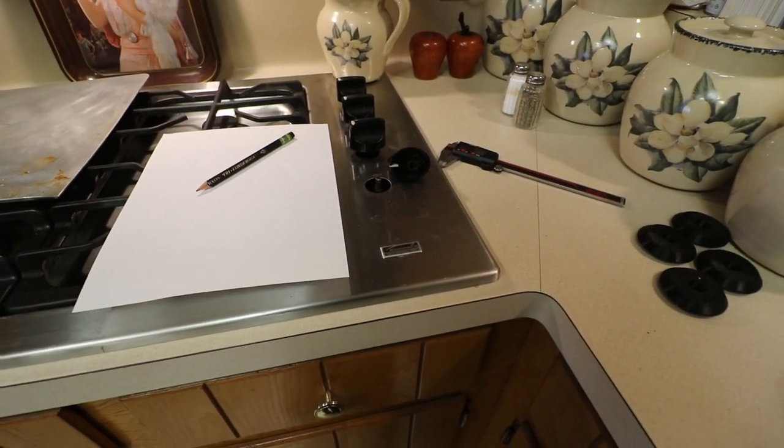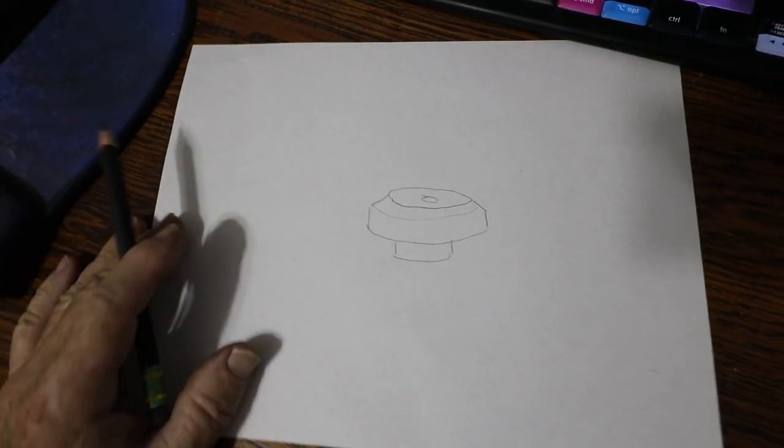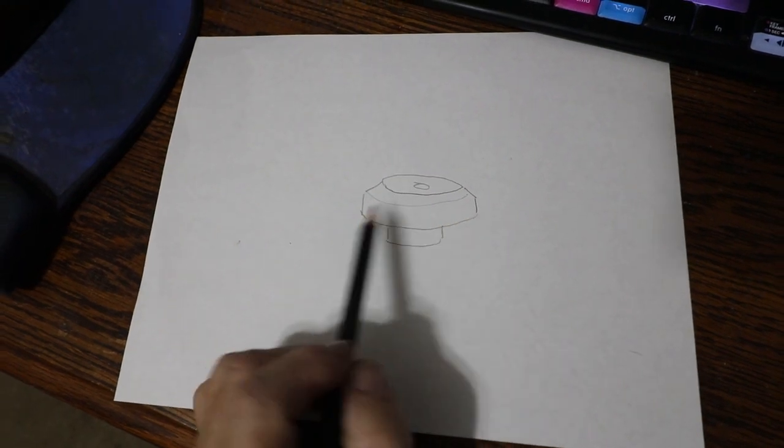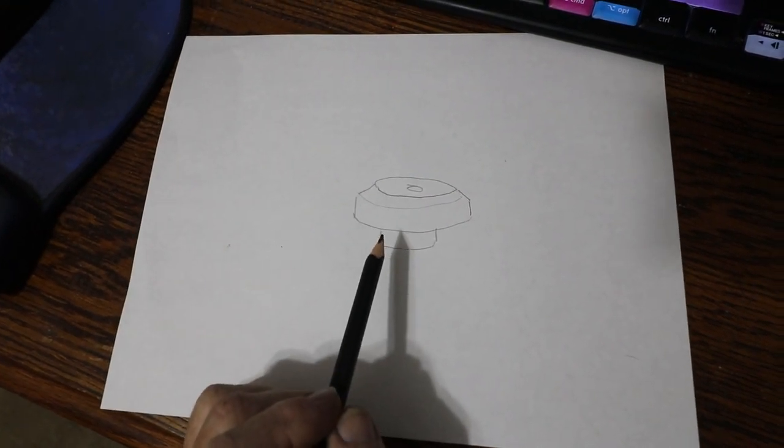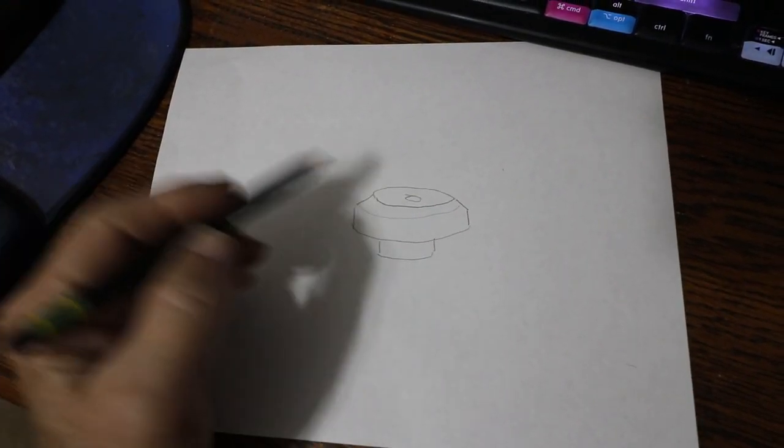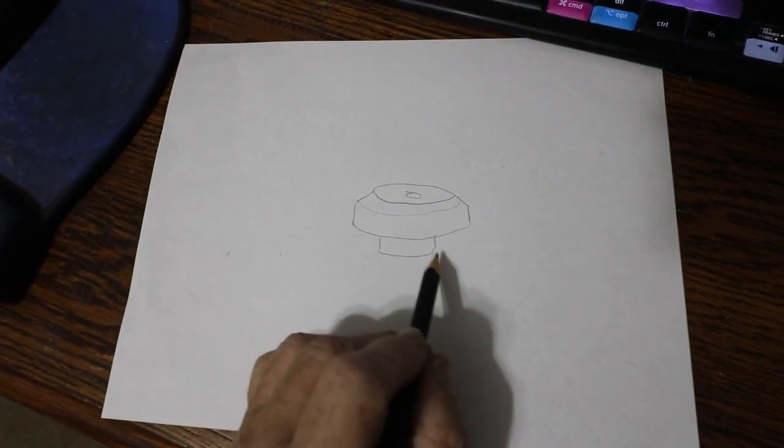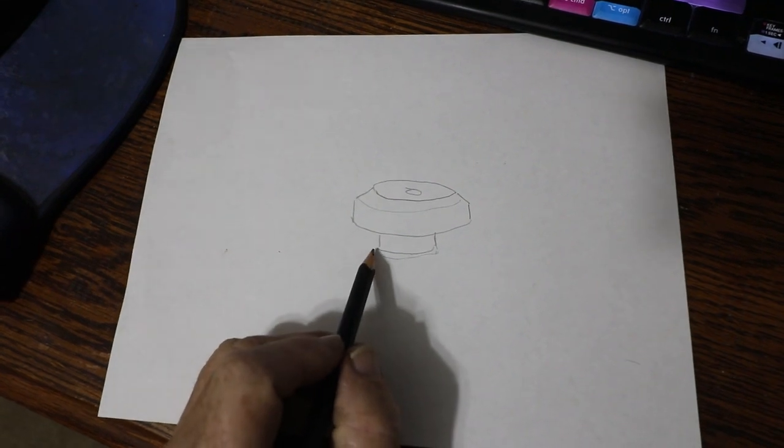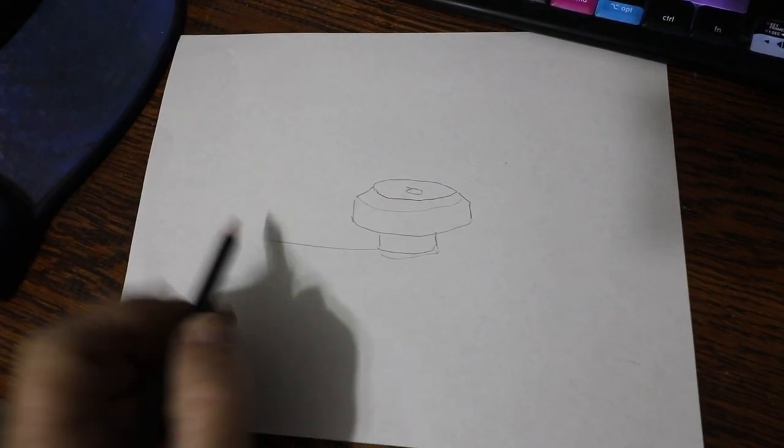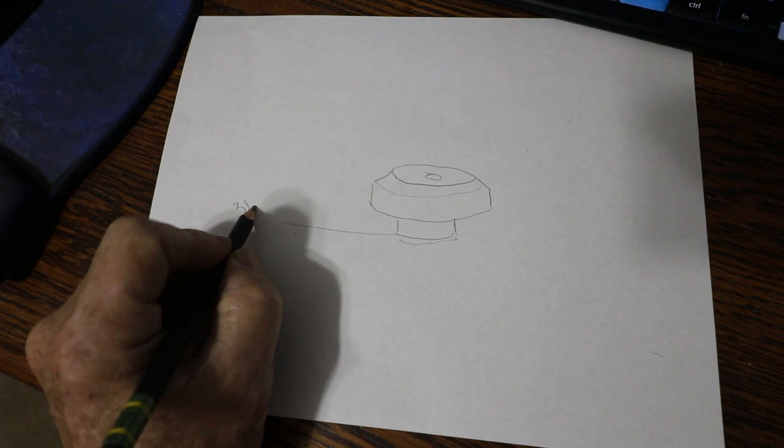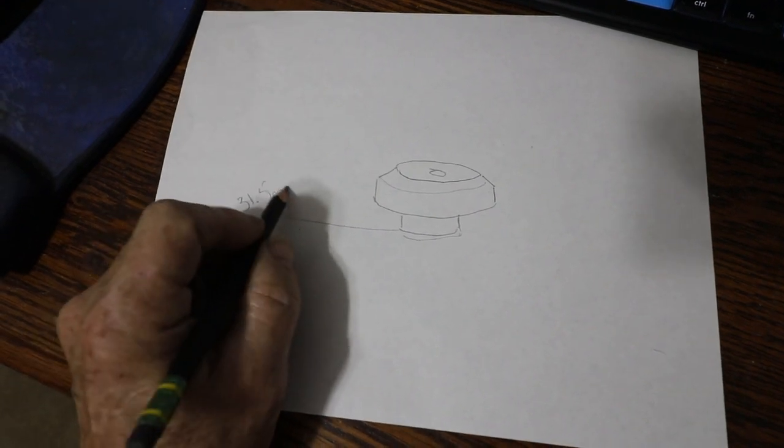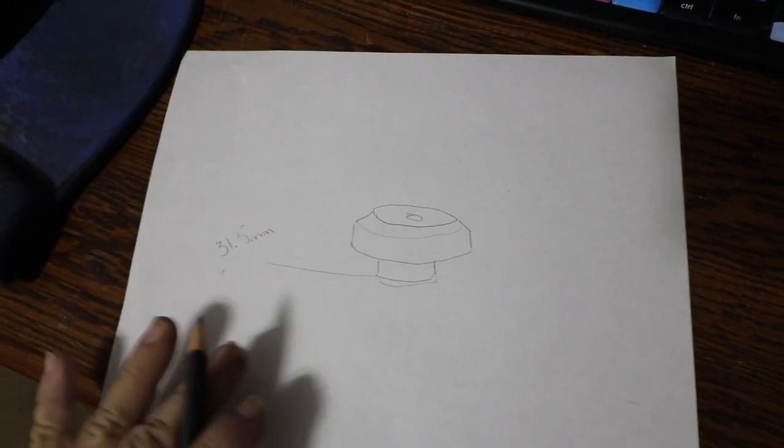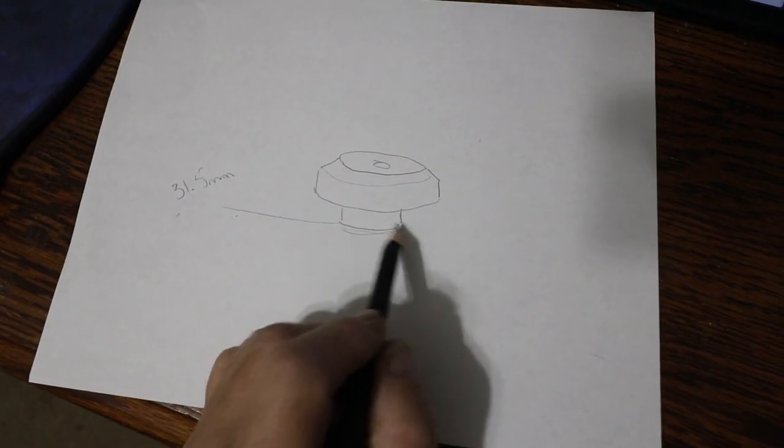So what I've drawn is just a basic idea of what a nice trim ring might look like on that stove, and what I need is some dimensions. I want to sleeve it down into those holes that were in the stove. So this here actually has to be about 31.5 millimeters. That at least tells us something about the outside, what the size of this part here is going to be.